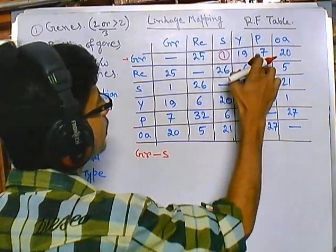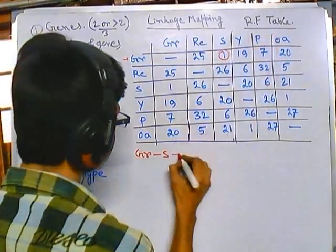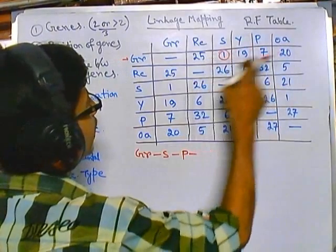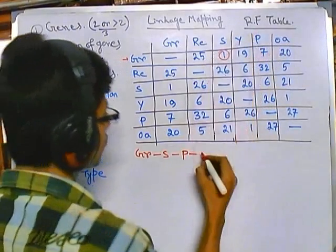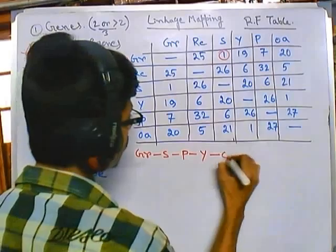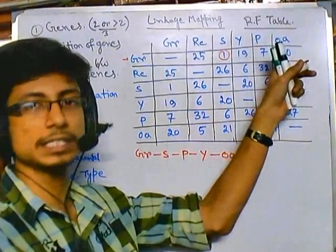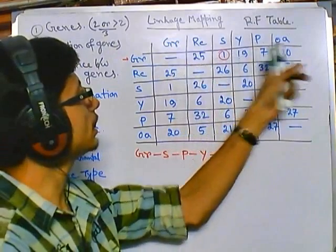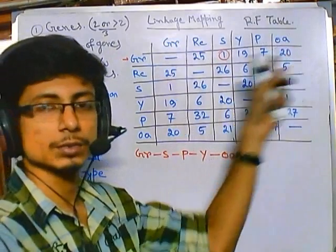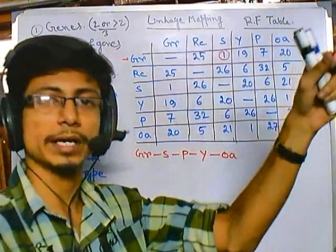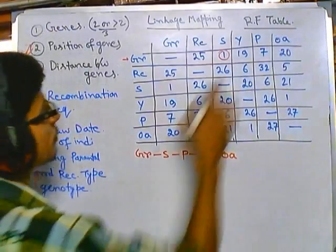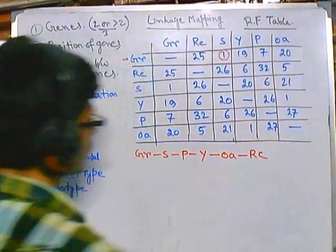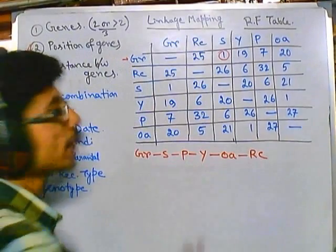After one, the next increase is seven, which is P. So let's put P after S. Then farther apart we have 19, which is Y, and 20, which is OA. So we are arranging all these genes using the recombination frequency numbers, going from the lower number toward the higher number. After OA, it will be RC. So this is the arrangement for the first row: GR, S, P, Y, OA, RC.